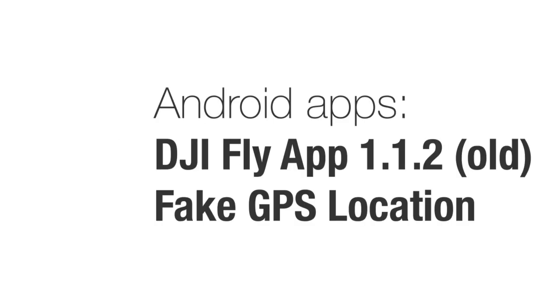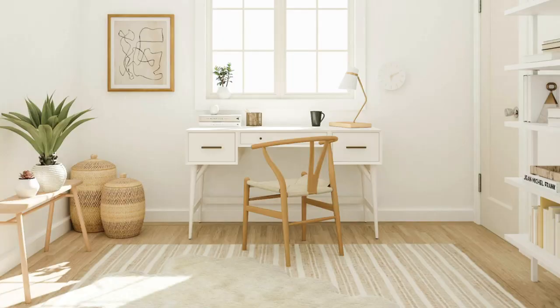Step 1. We will install an old version of DJI Fly app 1.1.2 and a special app called Fake GPS Location on your Android phone. The Fake GPS Location app helps simulate our location in the USA or Bolivia. This has to be done at home under a roof so that the drone does not receive GPS signal from satellites.